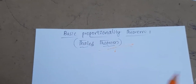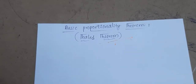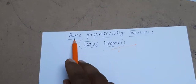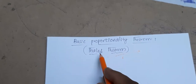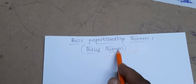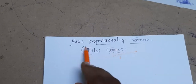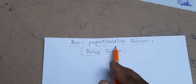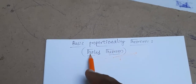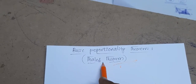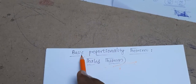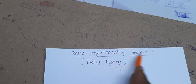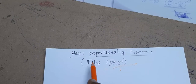Good morning, my dear mathlers. Today we will discuss the basic proportionality theorem, also known as Thales' theorem. This theorem was discovered by Thales, which is why it is named the basic proportionality theorem or Thales' theorem.